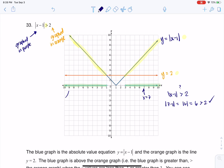Let me pick a number in this interval, like negative 9. Well, let's see if that works. What's the absolute value of negative 9 minus 1? Well, that's equal to the absolute value of negative 10, which is equal to 10, which is also greater than 2.